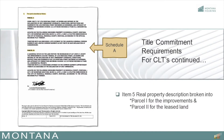The real property descriptions, item number 5 on Schedule A, must be broken into two parcels. Parcel 1 for the improvements or home and parcel 2 for the leasehold land.